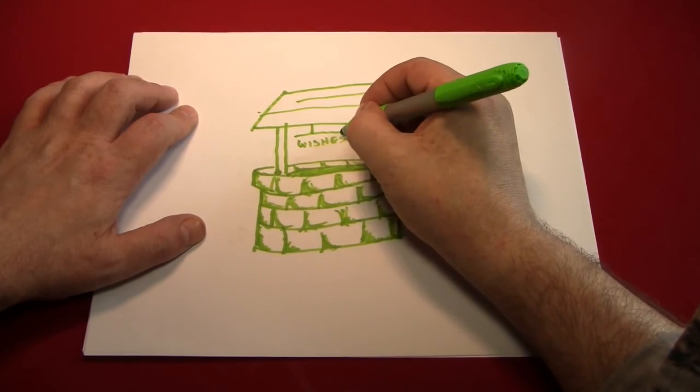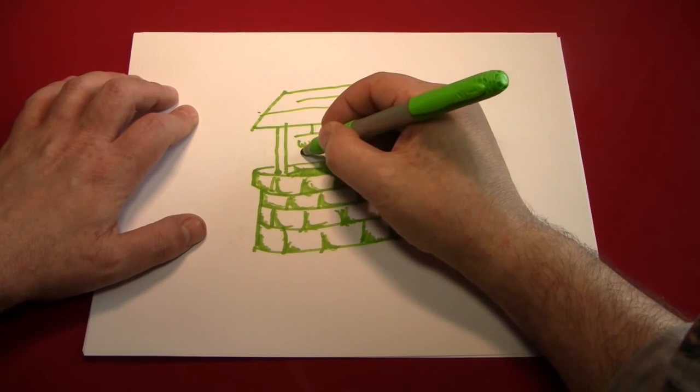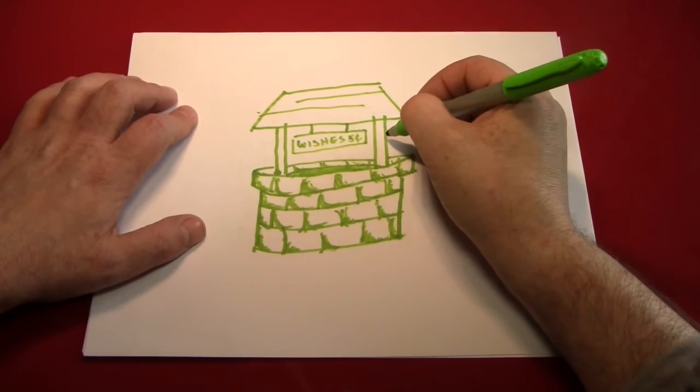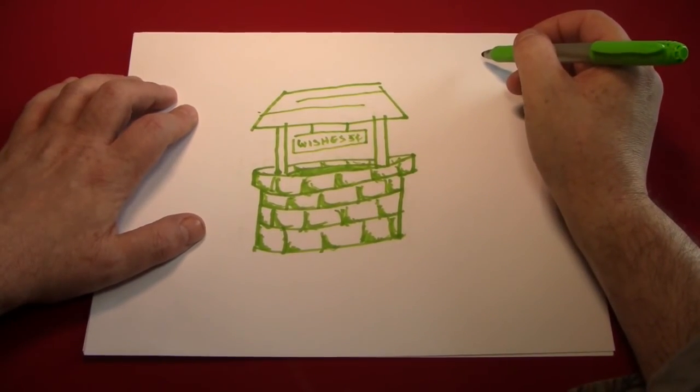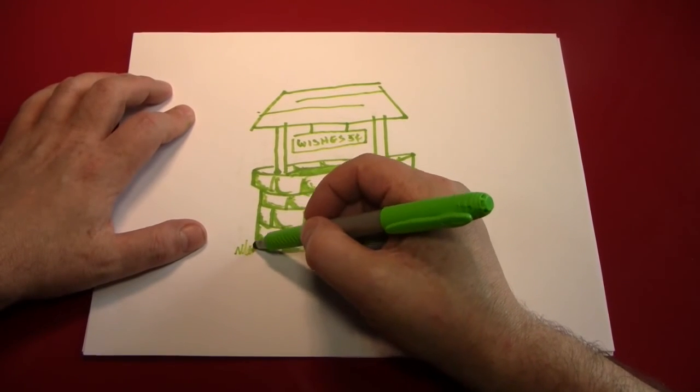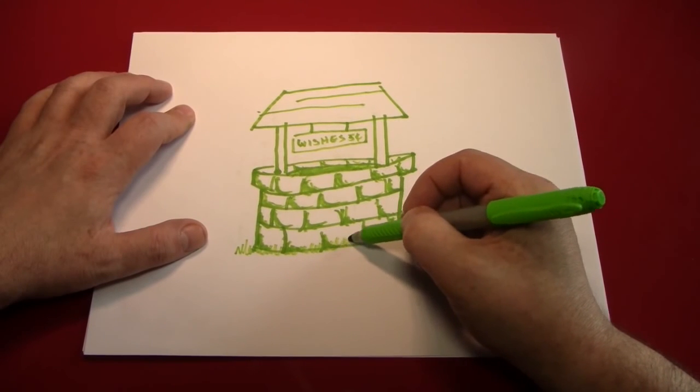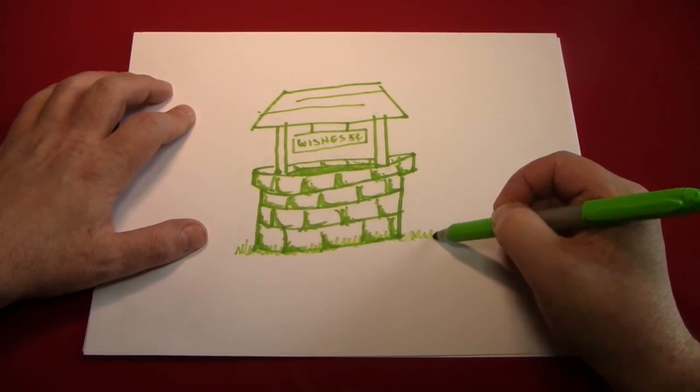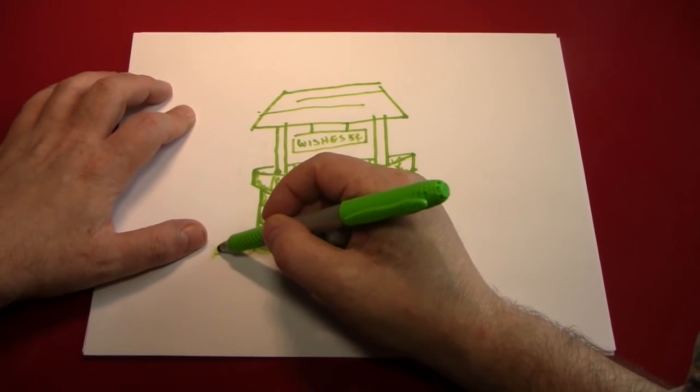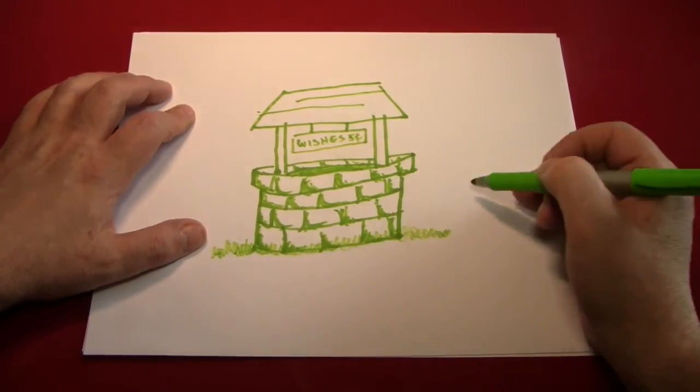That's right. It's a very affordable wishing well. And by writing the words first, it allowed us to make the sign the appropriate size. And that's basically it. Put some grass down here, as we usually do. And as this pen fades into dryness, we get ready to throw it away. We've finished another drawing here.